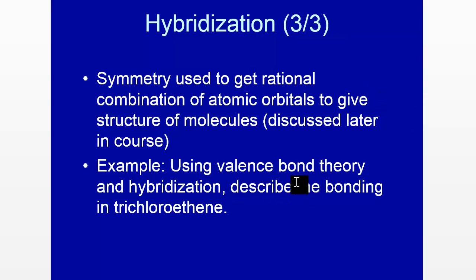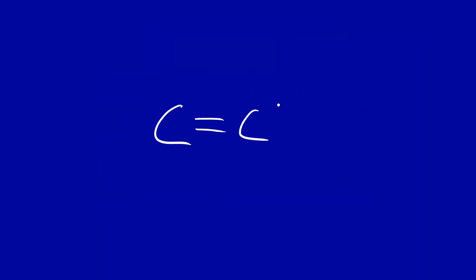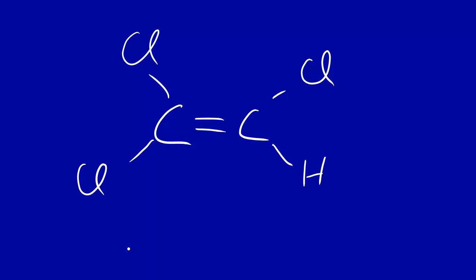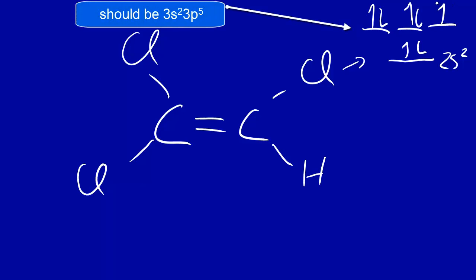Now let's use valence bond theory and hybridization to describe the bonding in trichloroethylene, or trichloroethene. The structure has a C=C double bond, with chlorine and hydrogen on one carbon, and two chlorines on the other. For chlorine, looking at valence electrons, we have 2s2 and five electrons in the p orbitals, so one p orbital overlaps with carbon. Terminal atoms like chlorine generally don't need hybridization to explain their bonding geometry, so we don't hybridize terminal atoms.